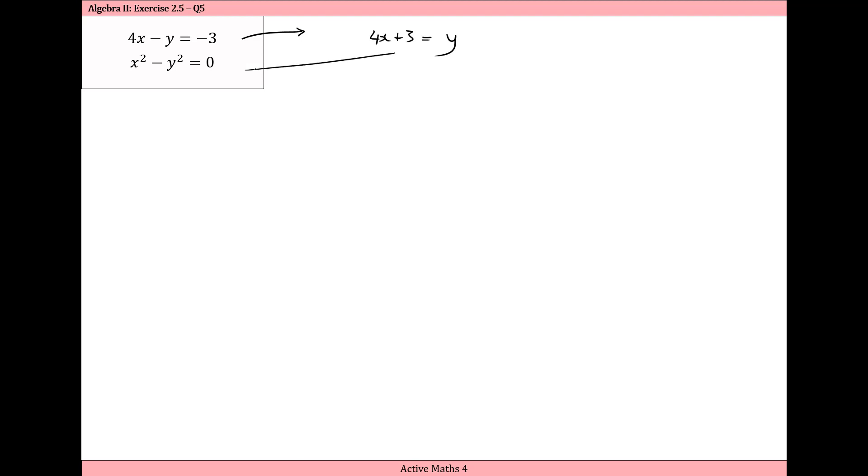And then I'm going to sub this value of y into the nonlinear expression. So I have x squared minus and then y is now 4x plus 3 squared and let that equal to 0. So we have x squared minus. Now keep a big bracket here while we square out the bracket.